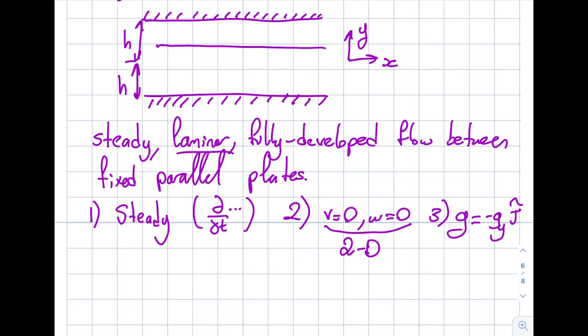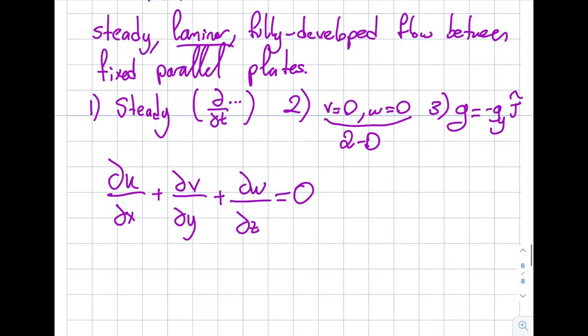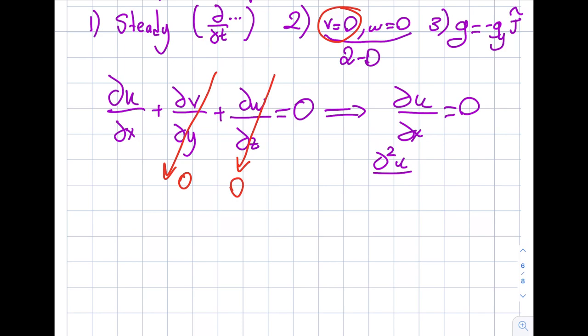Conservation of mass: del u/del x + del v/del y + del w/del z = 0, assuming density is constant. The del v/del y term goes to zero because V is zero, and the del w/del z term is zero because W is zero. So from here I get del u/del x = 0. This will come in handy — if del u/del x = 0, what happens to del²u/del x²? I can write it as del/del x of (del u/del x). Since del u/del x is zero, the derivative of zero with respect to x is also zero.